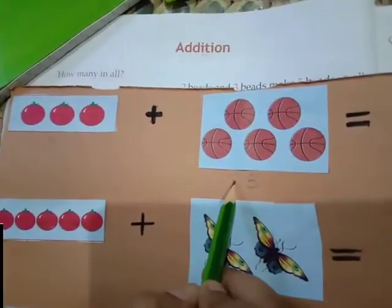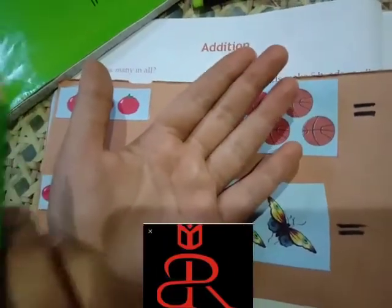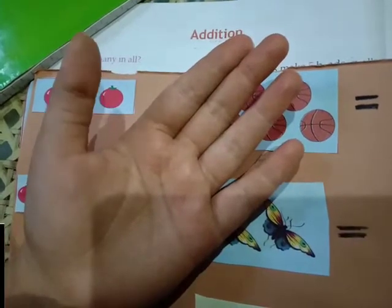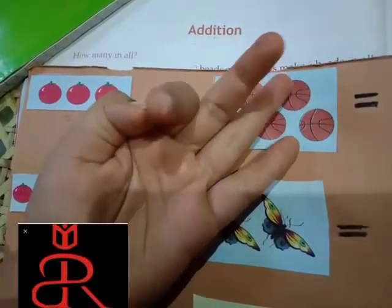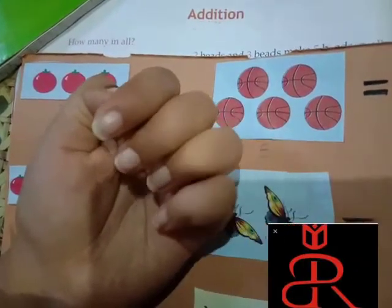And then, count five on fingers. This is your five fingers. So, after counting three, start counting after three. Four, five, six, seven, eight.